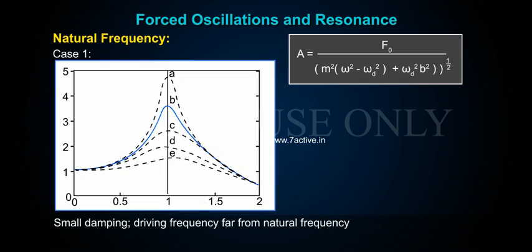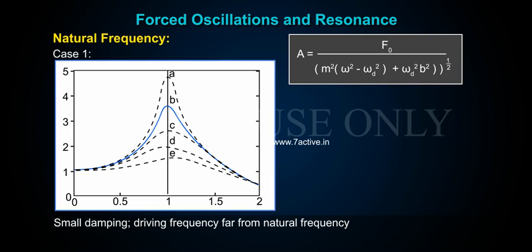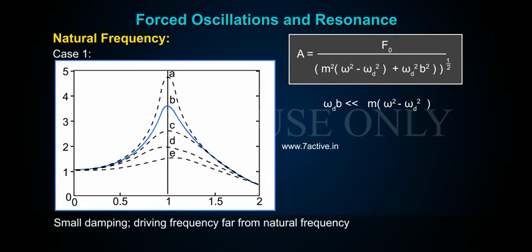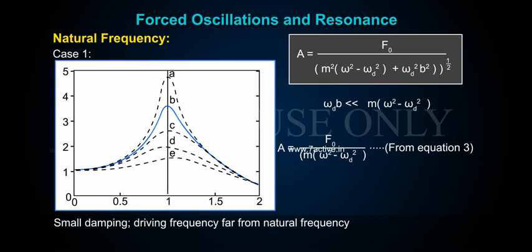Case one: Small damping with driving frequency far from natural frequency. When b << m|ω² − ωd²|, the amplitude simplifies to A = F₀ / [m(ω² − ωd²)], from equation three.